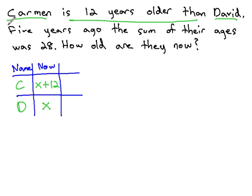Next piece of information we're given is 5 years ago. Stop there. This tells us the change. 5 years ago is in the past. To back up, we need to subtract those 5 years off. This means we're going to subtract 5 from each of the now cells. Carmen, x plus 12, when we subtract 5, we're left with just x plus 7. David, when we just have x and subtract 5 off, we simply have x minus 5.